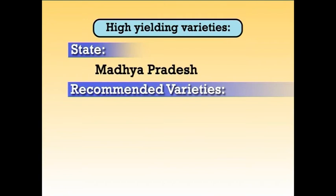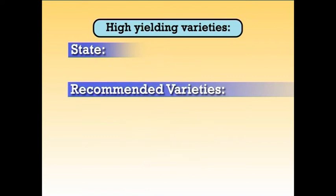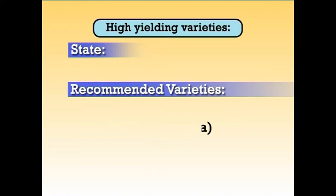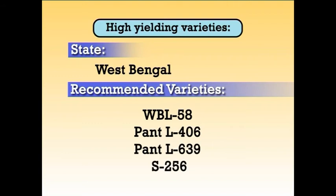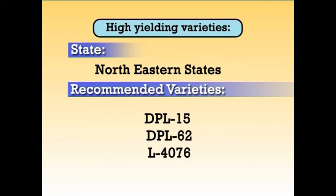For Madhya Pradesh — JL51, K75 (that is Malika), L4076 and Pant L4; for Maharashtra — K75 (that is Malika) and L4076; for West Bengal — WBL58, Pant L406, Pant L639 and S256; for the northeastern states — DPL 15, DPL 62 and L4076.